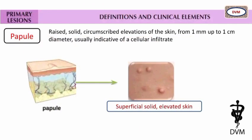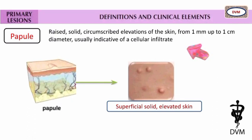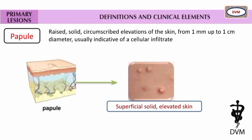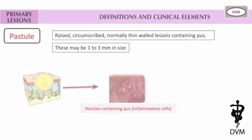Let's begin with papule. Papule is a primary lesion. Papule is the raised, solid, circumscribed elevation of the skin from 1 mm up to 1 cm diameter, usually indicative of a cellular infiltrate. You can see a 3D diagram of papule — the superficial, solid, elevated skin here.